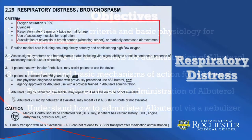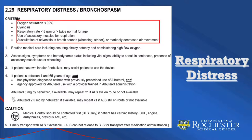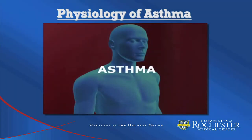The criteria for respiratory distress or bronchospasm in the MELREMS protocol includes an oxygen saturation less than 92 percent, cyanosis, respiratory rate less than 8 or greater than twice the normal for the patient's age, use of accessory muscles for respiration, and auscultation of adventitious breath sounds such as wheezing or stridor or markedly decreased air movement. It's important to note that respiratory distress patients may present with any one or more of these symptoms, but do not necessarily require all symptoms to meet this criteria.